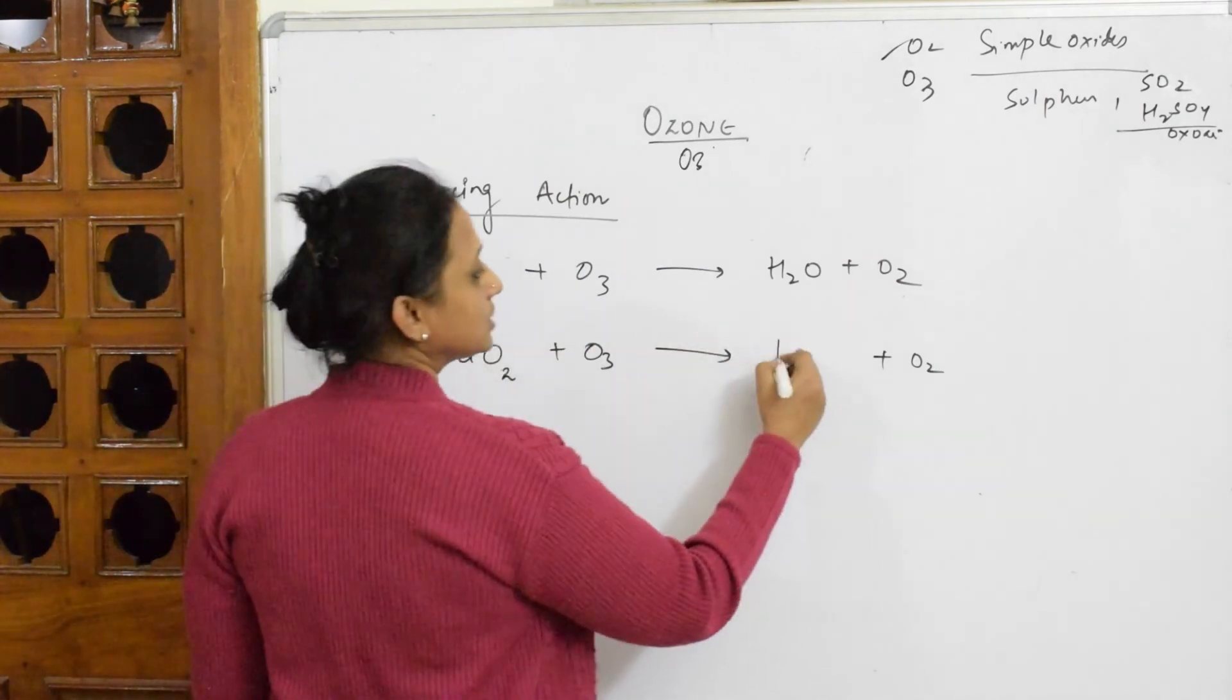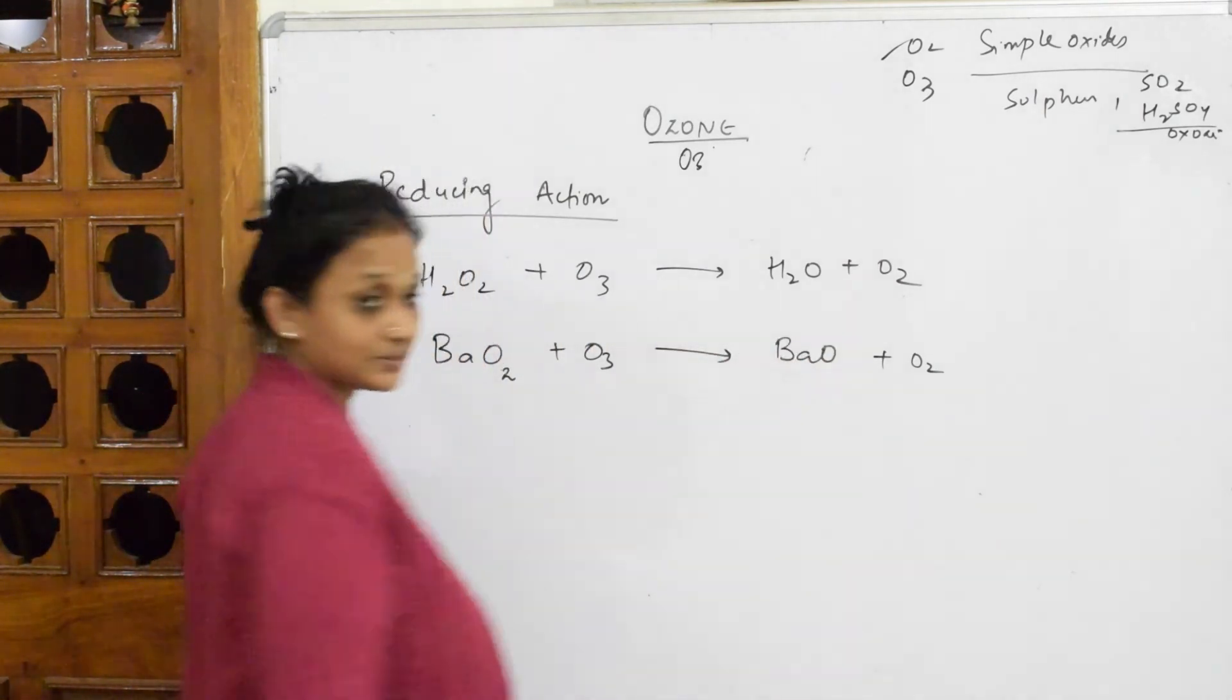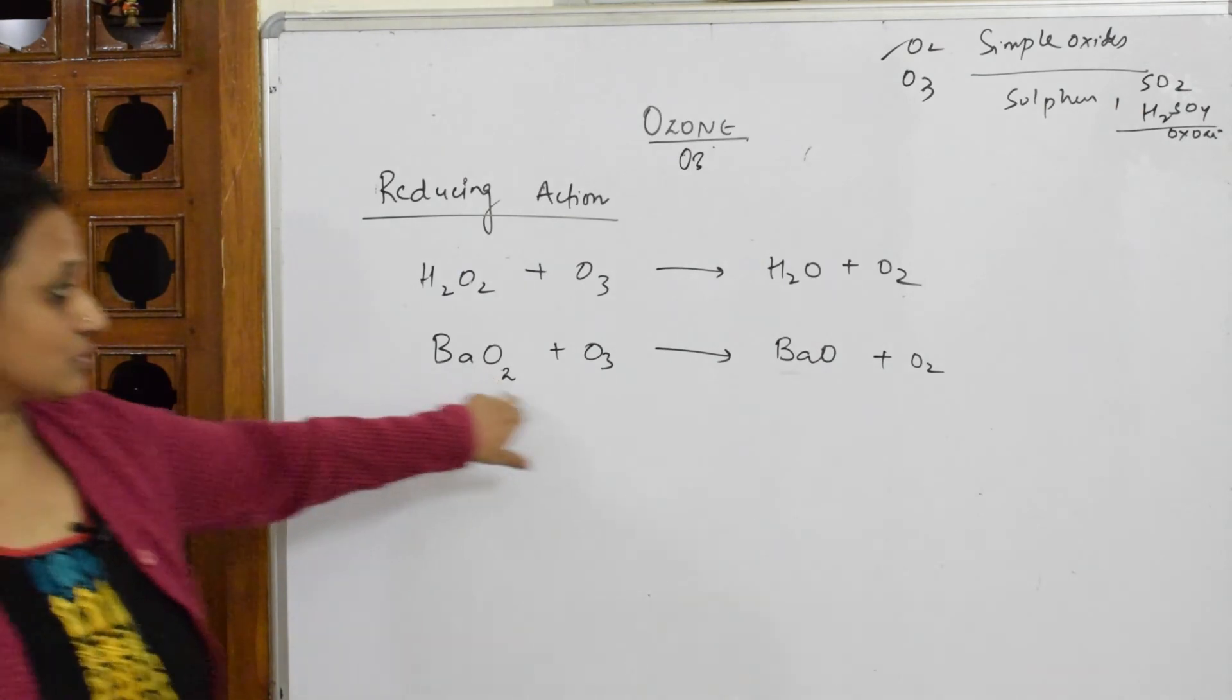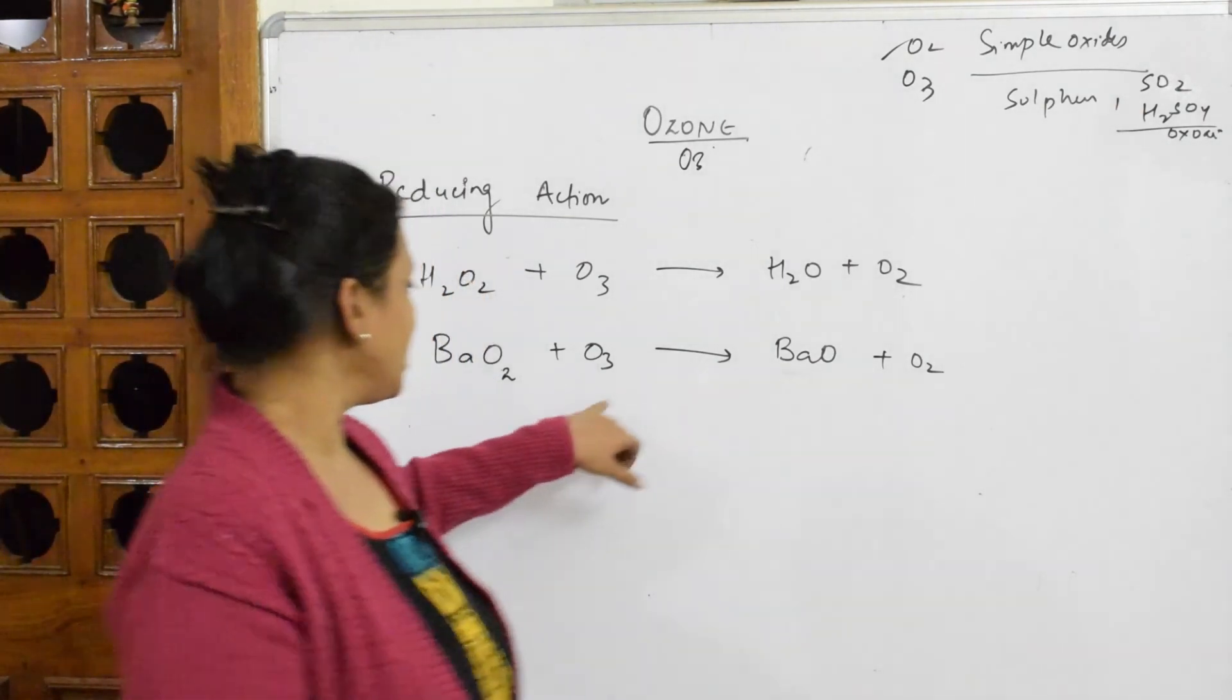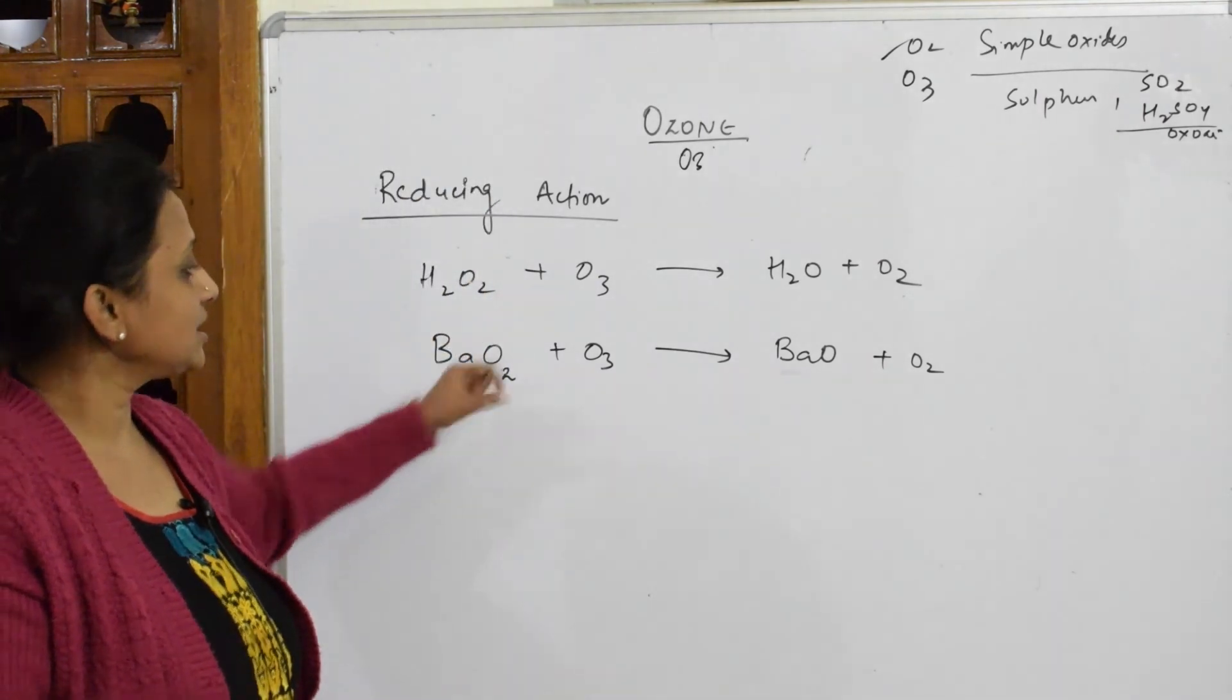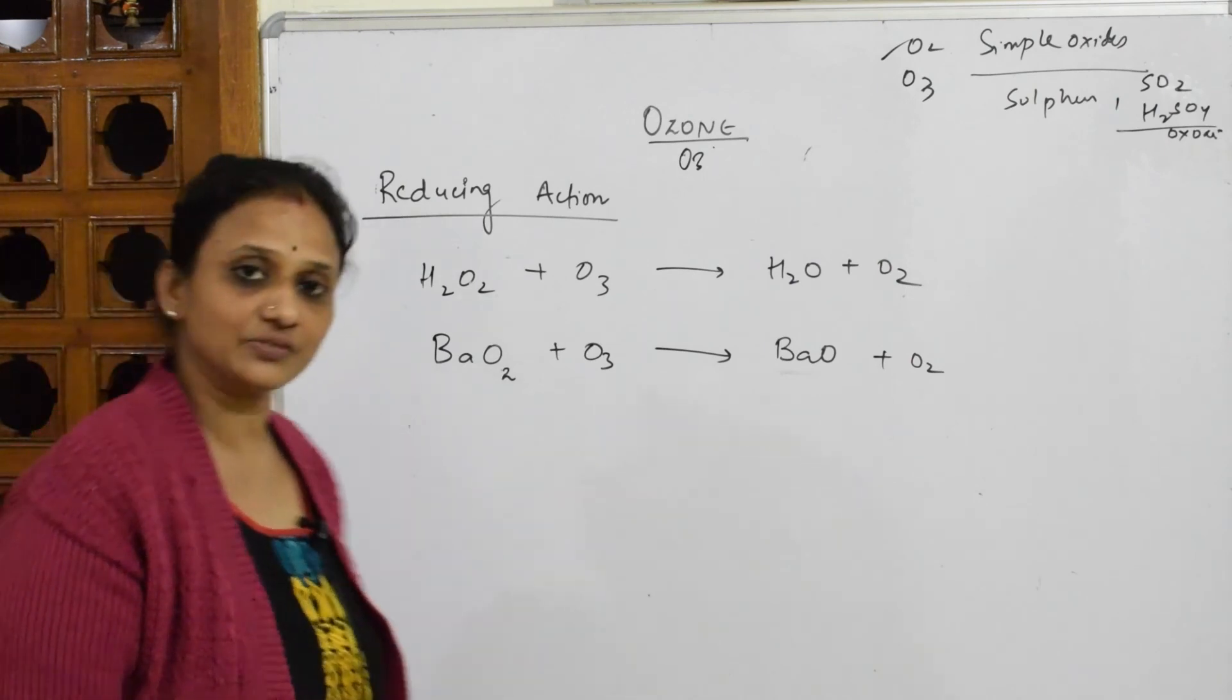The leftover gets converted to barium oxide. Now see, here the oxidation state is minus 2 into 2, which is minus 4. Here it is minus 2. Oxygen is 0. This has lost electrons and itself gets oxidized, and this got reduced.